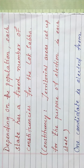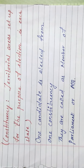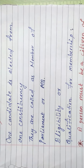The people directly elect members of the Lok Sabha. Depending on the population, each state has a fixed number of constituencies for Lok Sabha. For example, from Odisha, 21 members are elected to Lok Sabha. Let's know what is a constituency. It is a territorial area set up for the purpose of election in each state. One candidate is elected from one constituency.